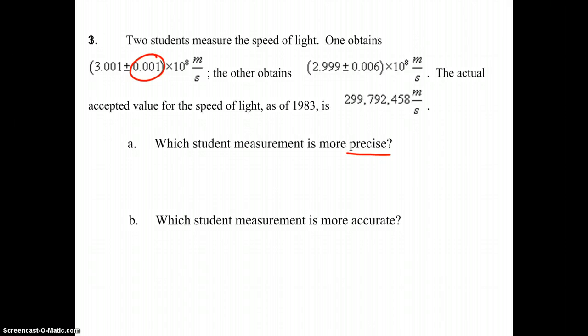So B, which student measurement is more accurate, simply means which one is closer to the accepted value for the speed of light. And we can see that this measurement right here, compared to the accepted value, is closer than our 3.001 measurement. Therefore, the 2.999 times 10 to the 8th meters per second measurement is more accurate.